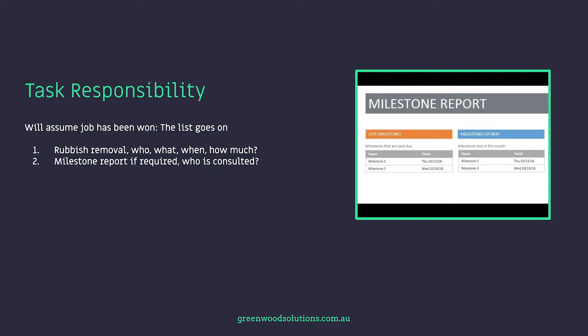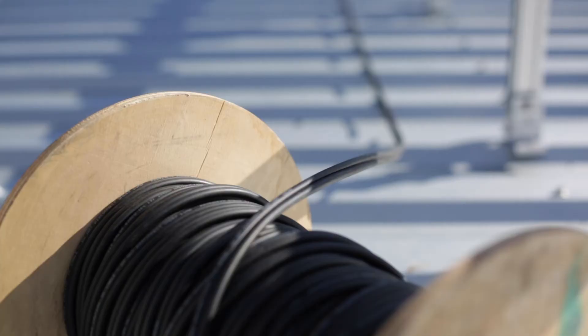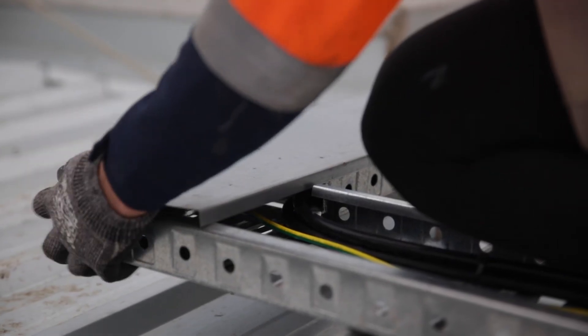Milestone reports are required on bigger projects. A milestone report might cover: install the feet, rail, and run the DC cabling — that's milestone report number one. Number two might be running the tray, putting the DC cable into the tray, closing the tray, and installing and checking the panels. It's simply a process of detailing what tasks were done, when they were done, and what the next task will be.